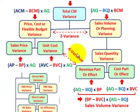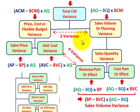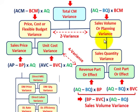Moving to a four-variance analysis: under price cost you have the sales price variance and the unit cost variance; under sales volume or planning variance you have the revenue part and the cost part. This diagram breaks down all the sales variances and shows how they interrelate with each other.